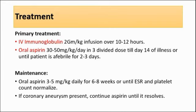For treatment of Kawasaki disease, the primary treatment is IV immunoglobulin given over 10 to 12 hours, and also oral aspirin until day 14 of illness or until the patient is afebrile for two to three days. For maintenance treatment, oral aspirin can be given for six to eight weeks, or until the ESR and platelet count normalize. If there is a coronary aneurysm as a complication, continue aspirin until it resolves.